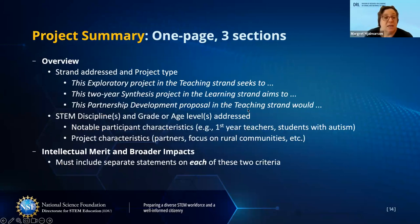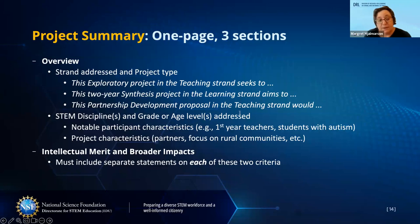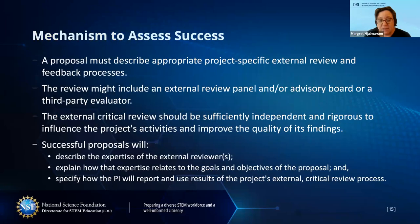The project summary should give an overview: which strand, which STEM discipline, the grade or age level, any notable participant characteristics—such as brand new teachers, students with autism, or pre-service teachers—and project characteristics like key partners or community focus. This is essentially the abstract of your project, helping program staff and reviewers quickly understand what you're trying to do. The two NSF merit review criteria—intellectual merit and broader impacts—need separate statements within this summary.